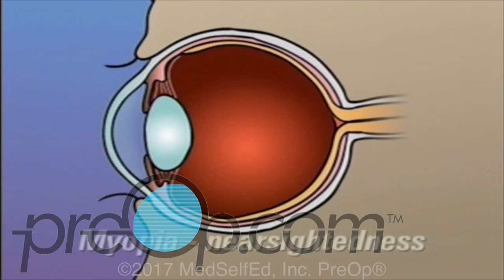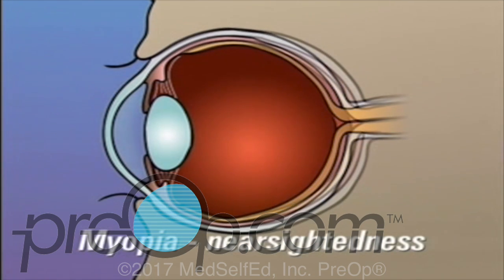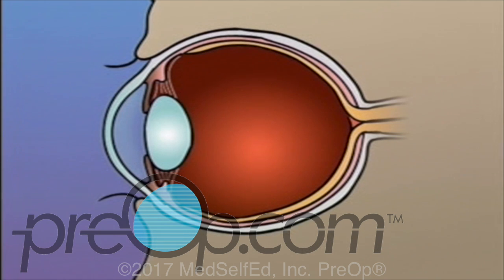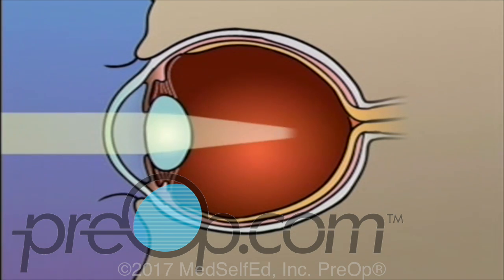Myopia, or nearsightedness, occurs when the shape of the eye is too long or the curve of the cornea is too extreme. In this case, light rays are focused on a point in front of the retina instead of on the retina itself.